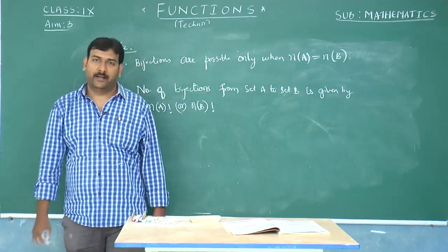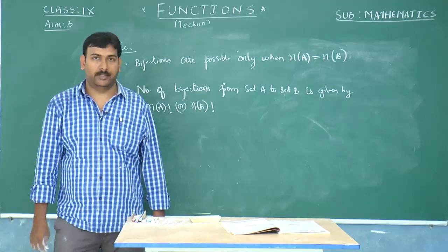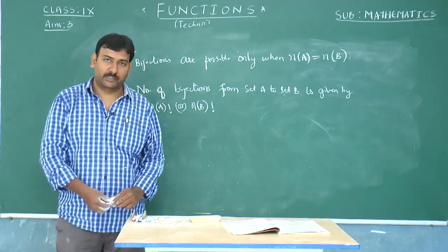For example, if n(a) contains 2 elements and n(b) contains 3 elements, the number of bijections possible is going to be 0.